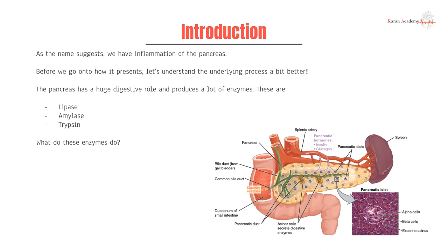What are the three main digestive enzymes the pancreas makes? The pancreas makes things like insulin as well, but for the purposes of this, let's talk about digestive enzymes. It makes lipase, amylase, and trypsin — or trypsinogen, that gets converted to trypsin.